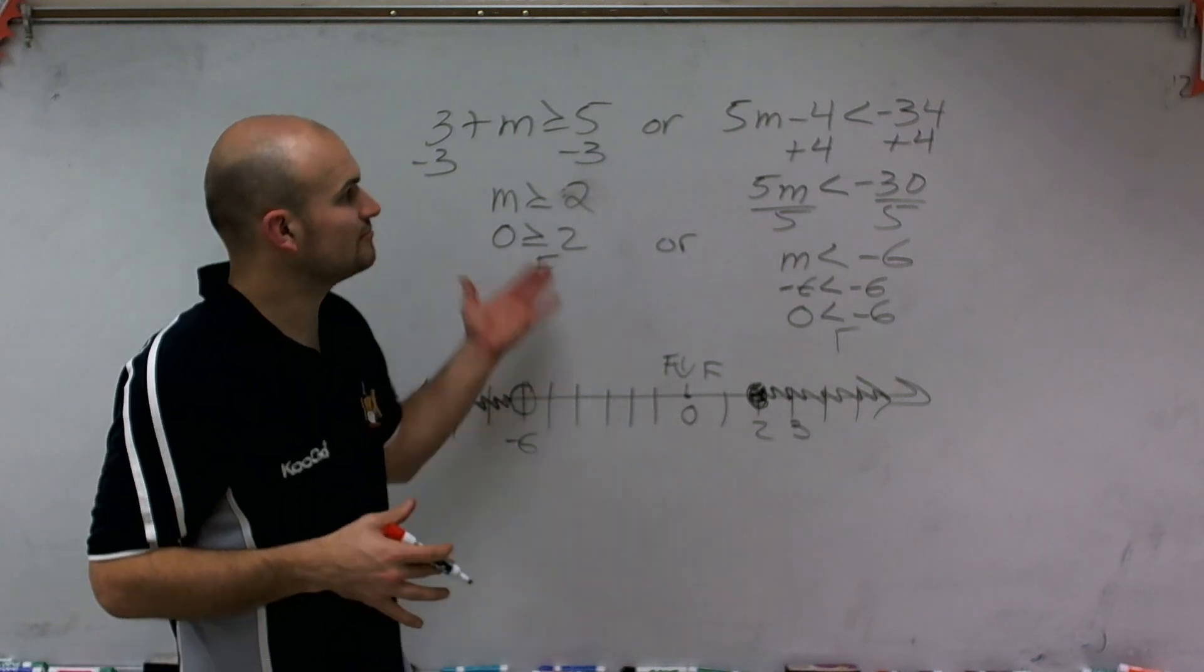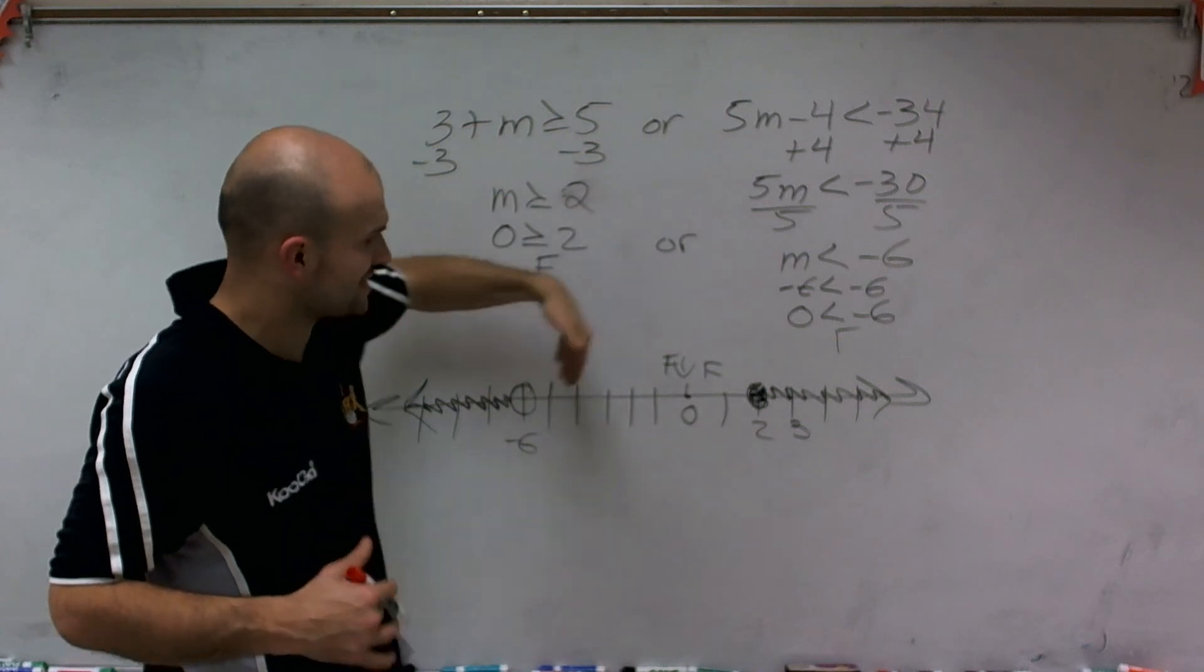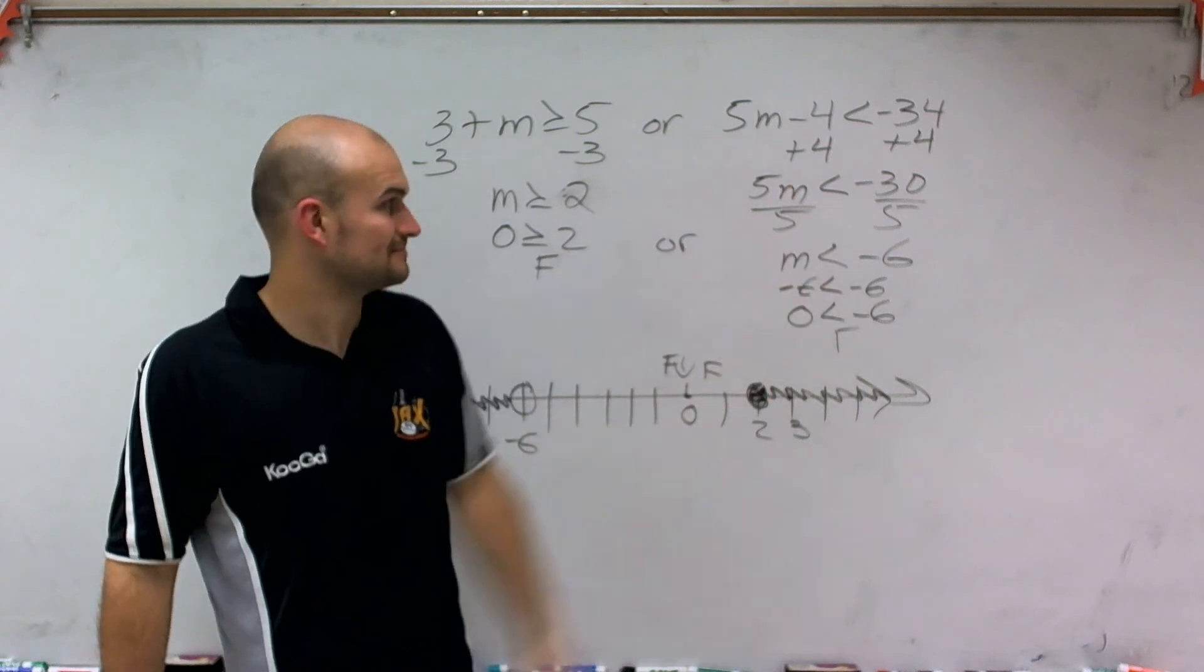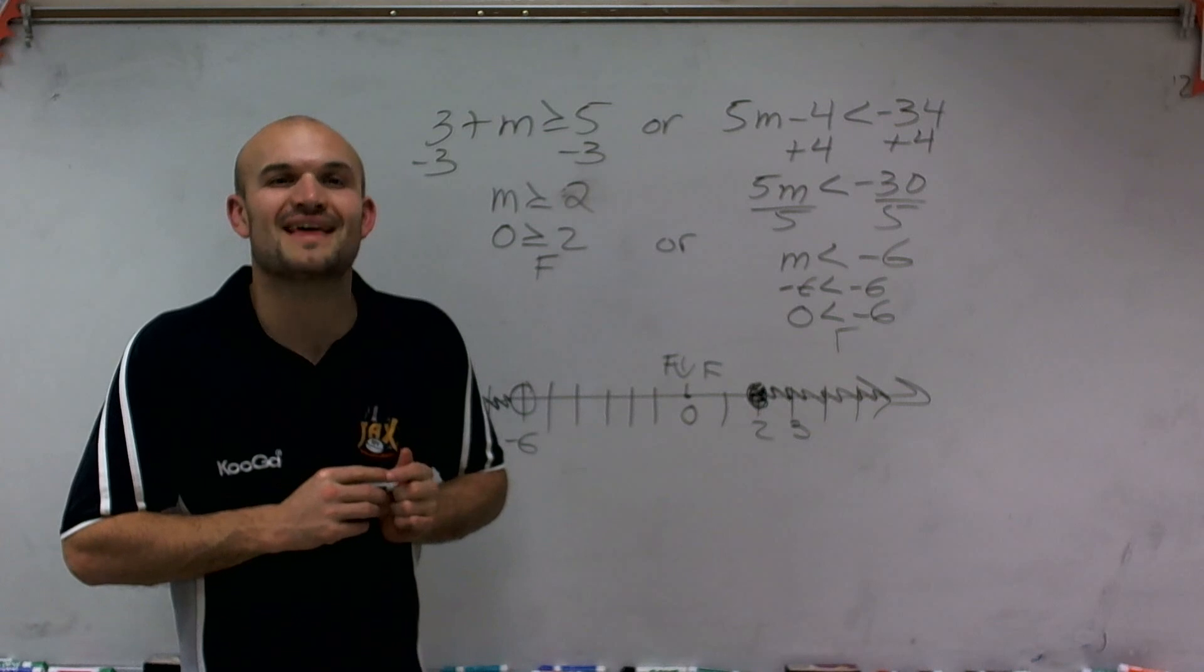So therefore, this compound statement is true for all values that are less than negative 6 or greater than or equal to 2. So there you go, ladies and gentlemen. That's how you solve and graph a compound inequality. Thanks.